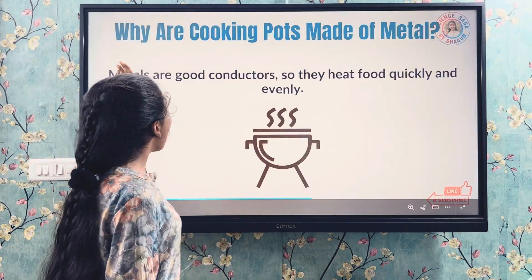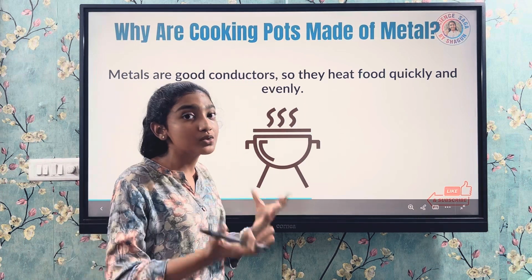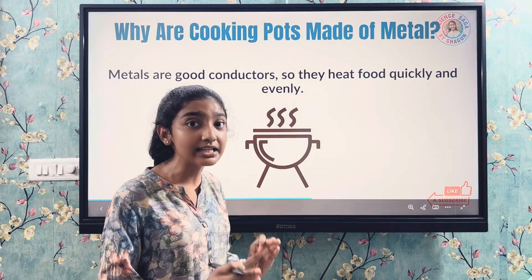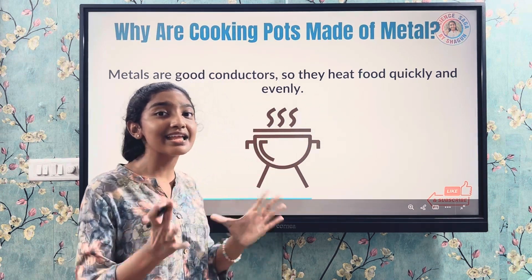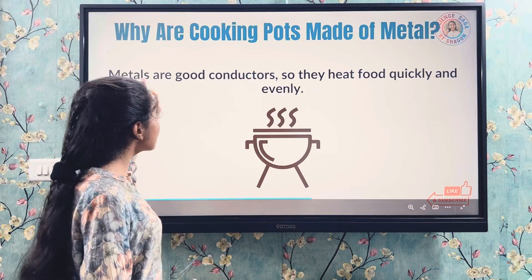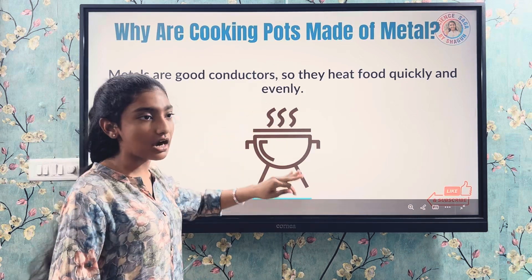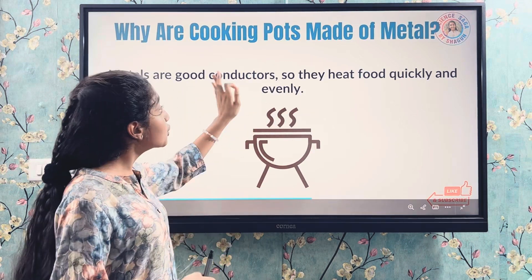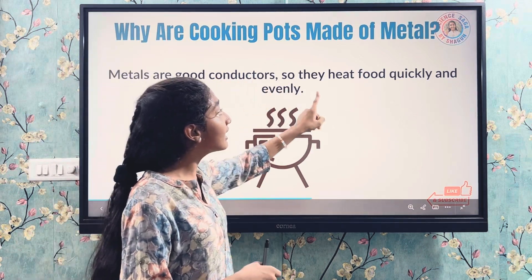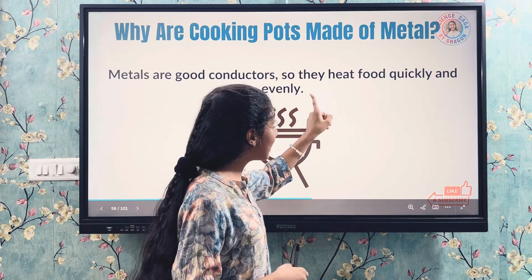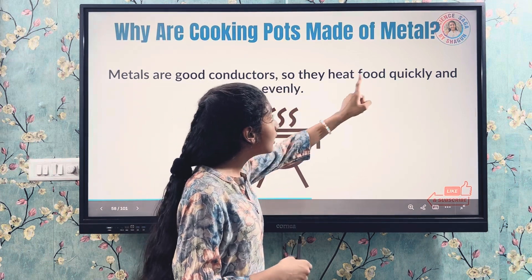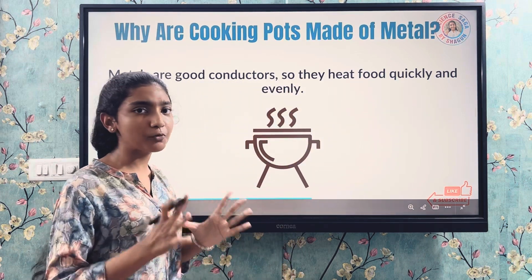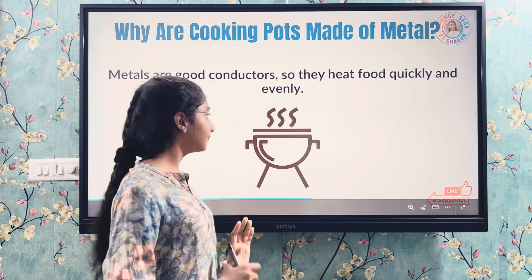Why are cooking pots and utensils made of metals? Because metals are good conductors of heat. They heat food quickly and evenly, so the food is cooked properly.